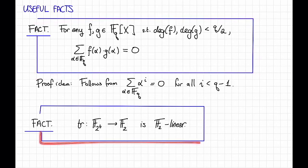The second useful fact, which we've already seen, is that the trace, which we defined in the previous video, maps f2 to the t down to f2 and is f2 linear. Okay, so given these two useful facts, let us do some computations.